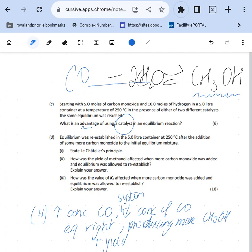And the last one: how was the value of Kc... Now anytime they ask you about the value of Kc you're always just thinking it's temperature dependent. So how was the value of Kc affected when more carbon monoxide was added and equilibrium was allowed to re-establish? Explain your answer. No effect. Key thing here: Kc only temperature dependent.